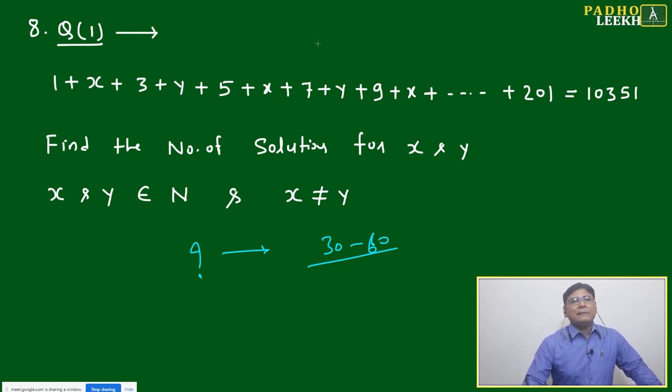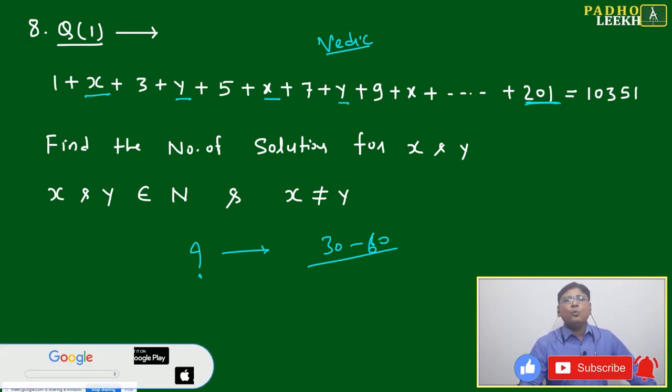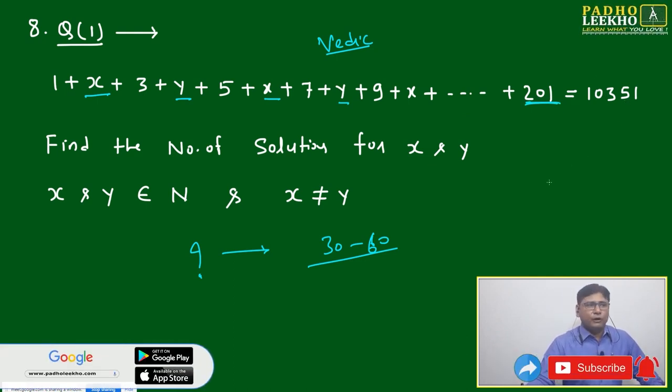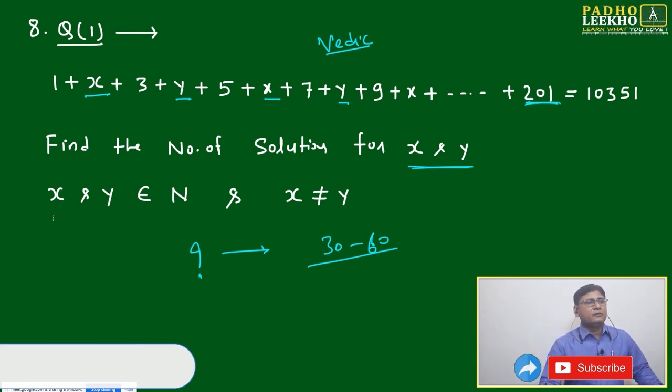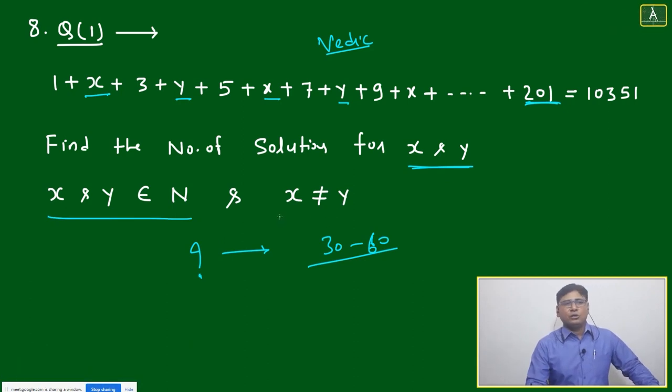Again I'm telling you, Vedic math you must do. You must make an understanding of the numbers, visualization of numbers. The question is: 1+x+3+y+5+x+7+y, it keeps going up to 20, equals 10351. Find the number of solutions for x and y when x and y belong to natural numbers.